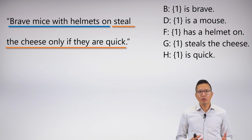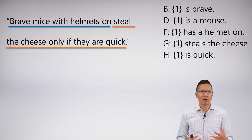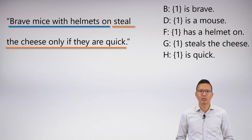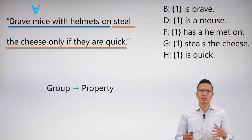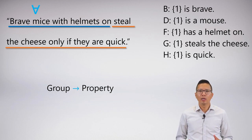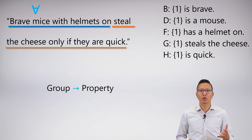The next thing we want to do is ask what quantifier are we talking about — all brave mice with helmets on, or some brave mice with helmets on? I find it really helpful to say that out loud. This is also the zero article example, so we know this is a universal. We're going to symbolize it in the standard way: group arrow property. Looking at the abbreviation scheme, I see B for brave, D for mouse, and F for has a helmet on, and I symbolize it in the standard canonical universal way, using X as my variable.